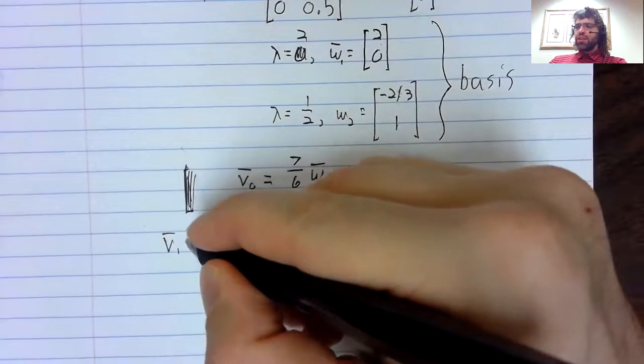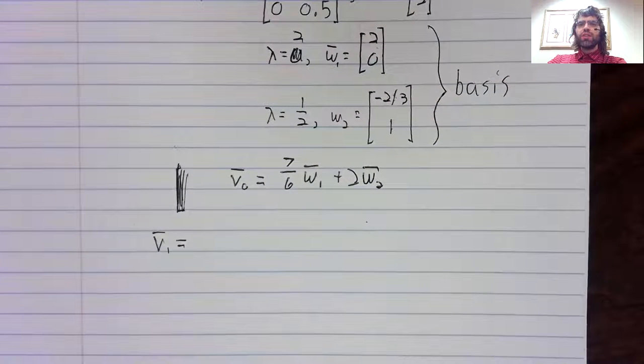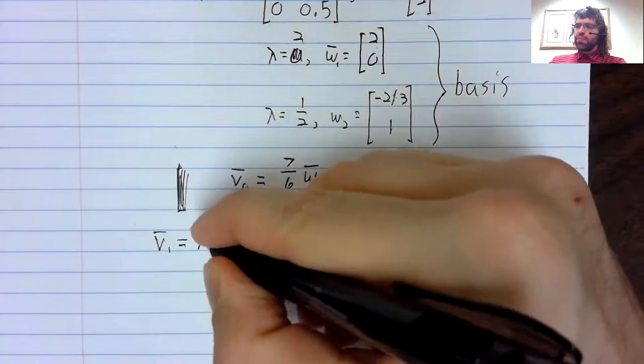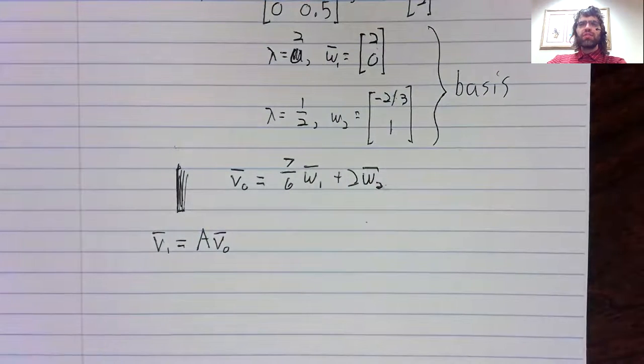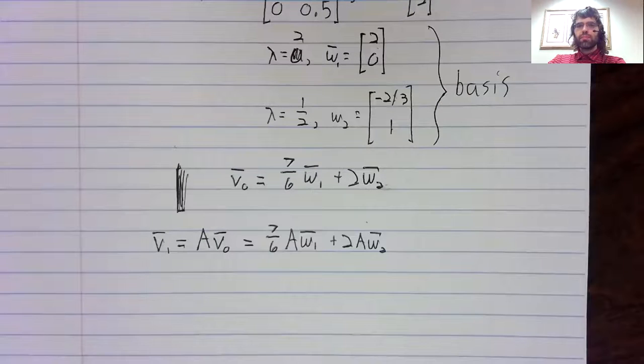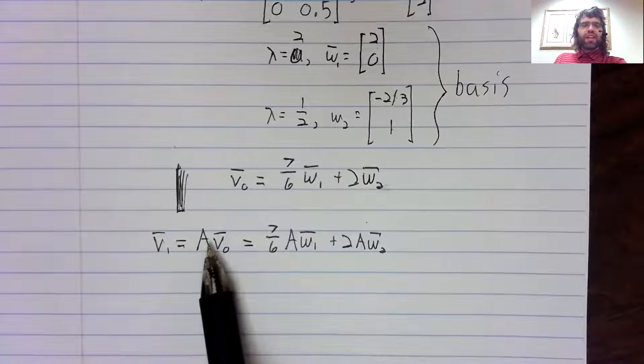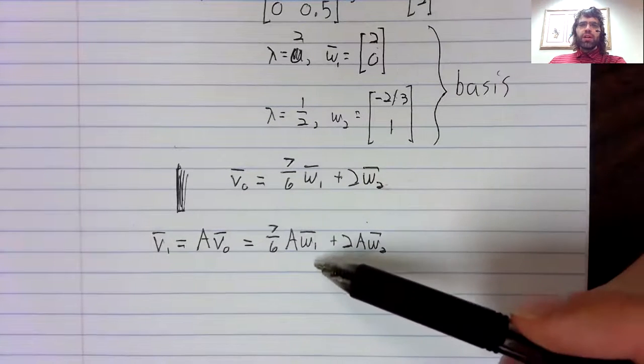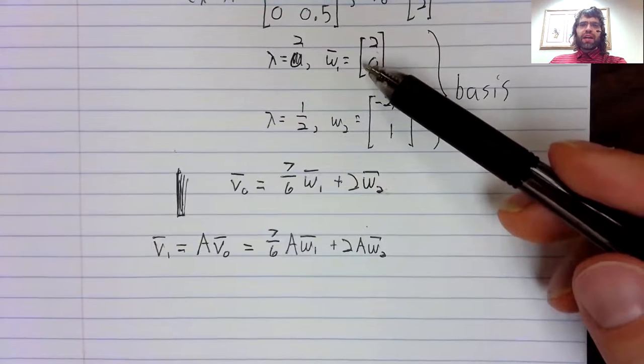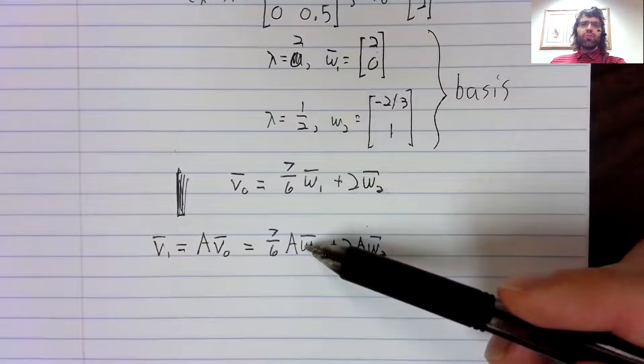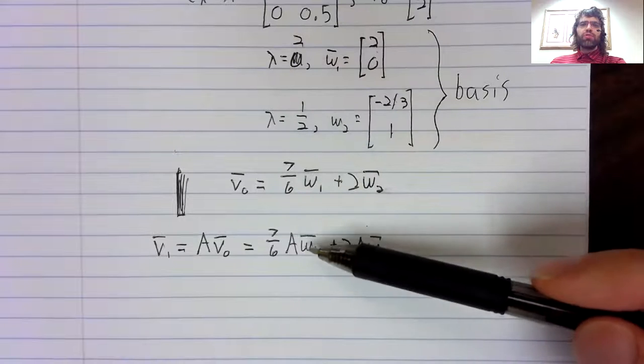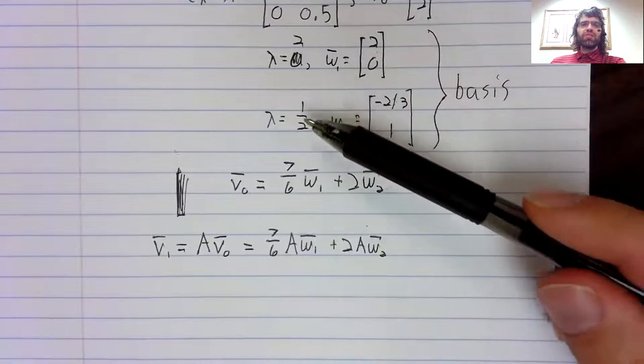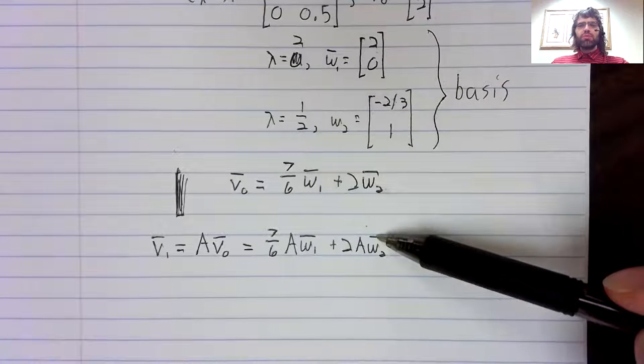Let's now find V_1. V_1 is by definition A times V_0. Matrix vector multiplication distributes over addition. And now, V_1 is an eigenvector. A times V_1 is the eigenvalue times V_1. A times V_2 is this eigenvalue times V_2.